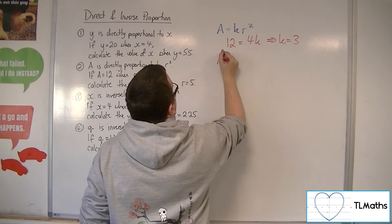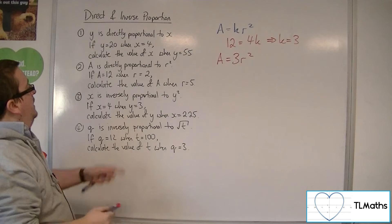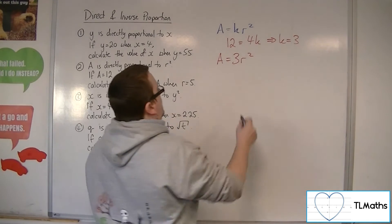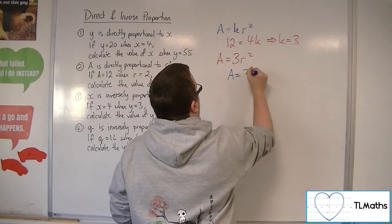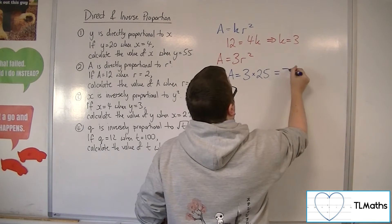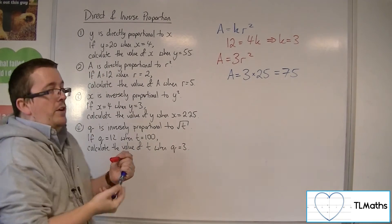So we have that a is equal to 3r squared. Calculate the value of a when r is equal to 5. So a is equal to 3 lots of 25, 5 squared. So that's 75. So a is 75 in that case.